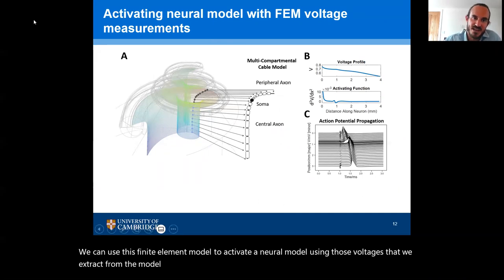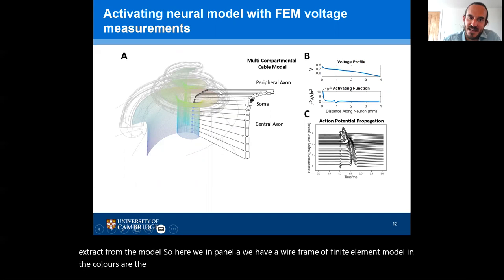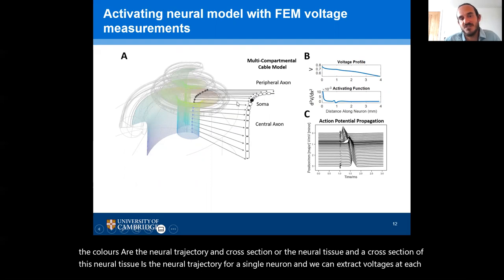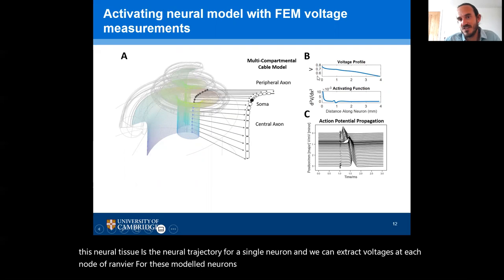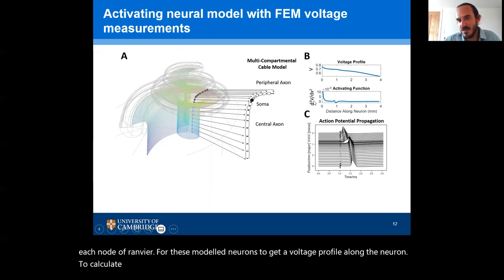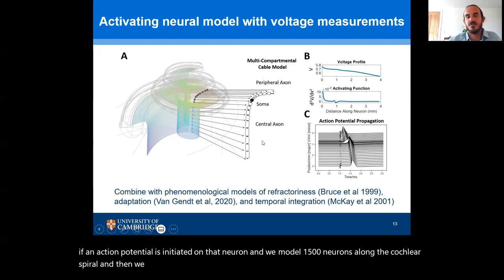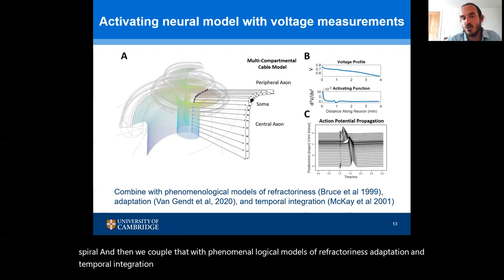In panel A, we have a wireframe of the finite element model where the colors represent the neural trajectory and neural tissue. A cross section of this neural tissue gives the neural trajectory for a single neuron. We can extract voltages at each node of Ranvier for these modeled neurons to get a voltage profile along the neuron, calculate the activating function — the second spatial derivative of the voltage — and then determine if an action potential is initiated on that neuron. We model 1,500 neurons along the cochlear spiral and couple that with phenomenological models of refractoriness, adaptation, and temporal integration to account for the temporal dynamics of neurons.